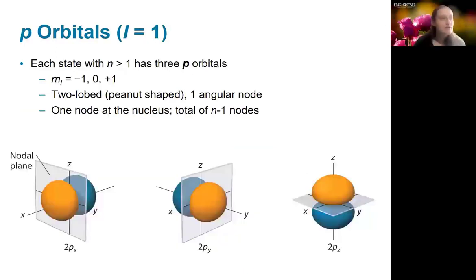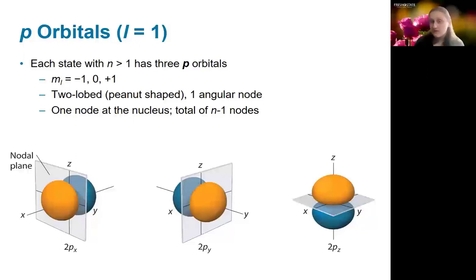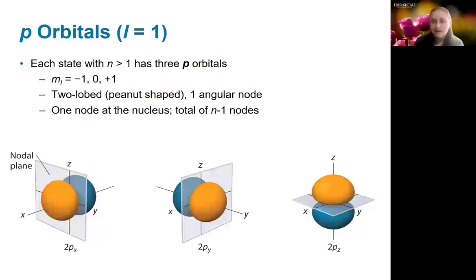P orbitals have l equal to 1, and every state with n greater than 1, starting at n equals 2, has three p orbitals. These are oriented along x, y, and z axes, though those axes are somewhat arbitrary — the important thing is there are three of them and they are orthogonal to each other. P orbitals have one angular node. In the n equals 2 case there is only one total node, but in the n equals 3 p orbitals there is a radial node plus the angular node, maintaining n minus 1 total nodes.